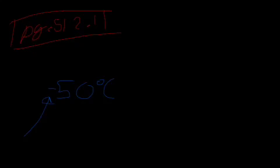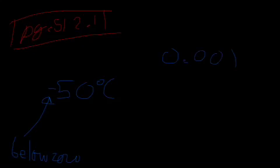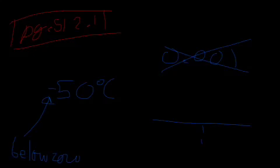So you probably have heard what negative numbers are before. Negative numbers are numbers with a negative sign. For example, if it's really cold, in Antarctica, they can get temperatures of like negative 50 degrees Celsius. This negative sign tells us it's below zero. If you draw a number line, you've got zero here, one here, and negative one here.